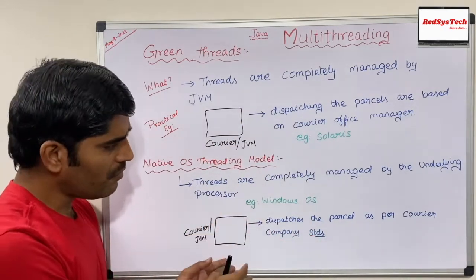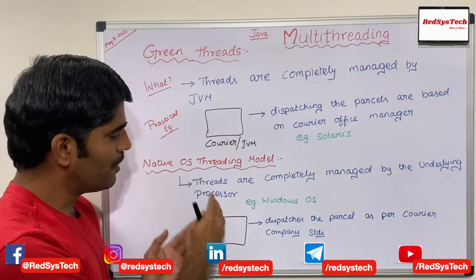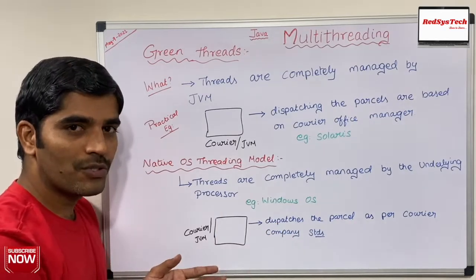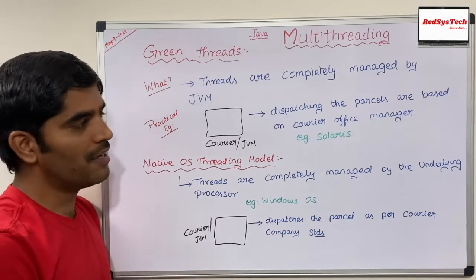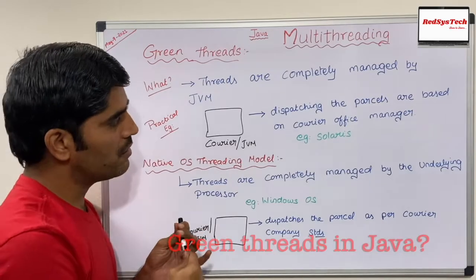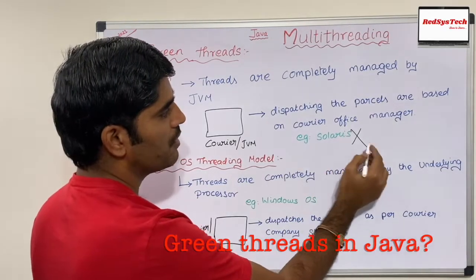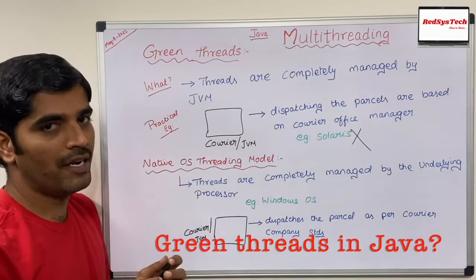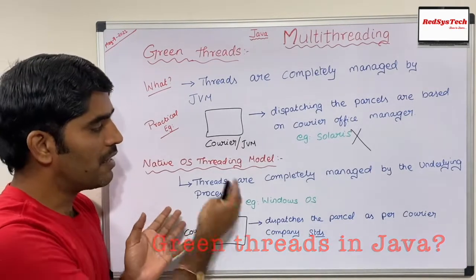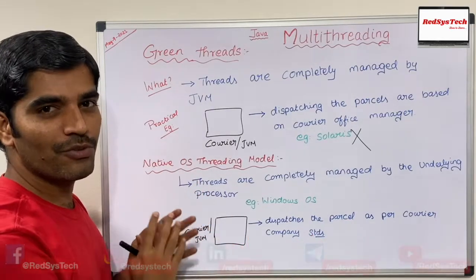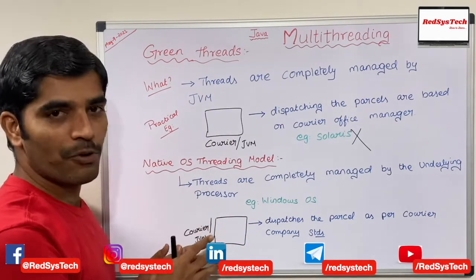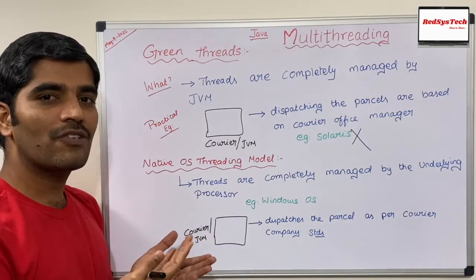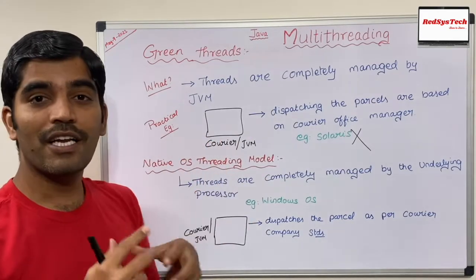The best example for green threads is Solaris; the best example for native OS threading is Windows or Mac. In the native OS model, the manager dispatches parcels as per company standards rather than serving someone personally. The green thread model is no longer recommended or used. All platforms we currently use — Windows, Mac — follow the native OS threading model managed by the underlying processor. This is just a conceptual difference; we are not going to write any program on this, but it's important to understand how the underlying platform plays a role in managing thread lifecycle.